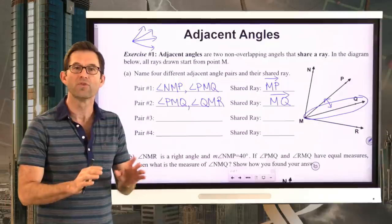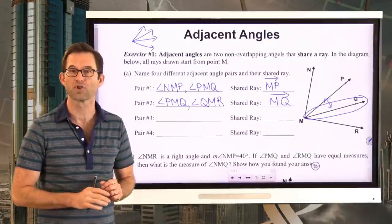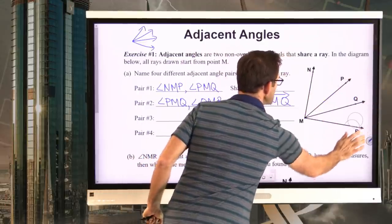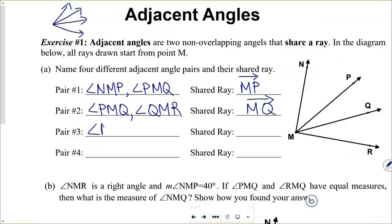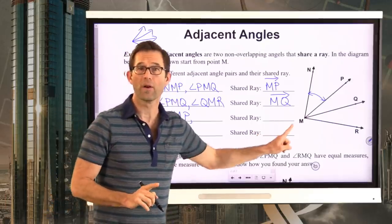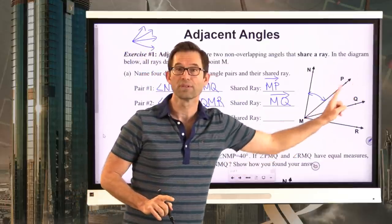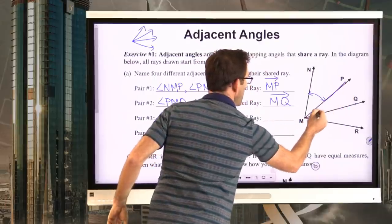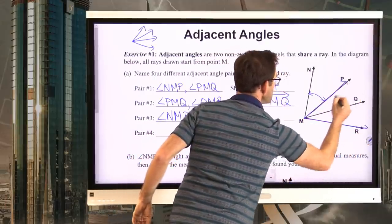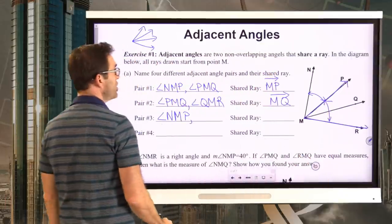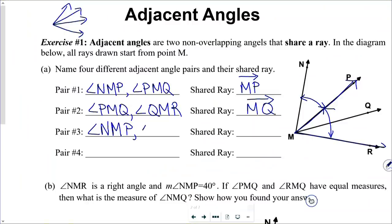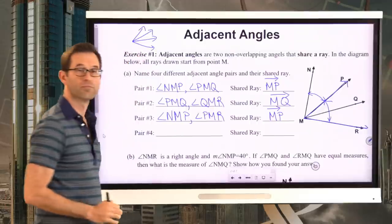Those were probably the two most obvious pairs of adjacent angles. Let's go back to angle NMP. There's another angle on here that also has ray MP besides PMQ, and that would be angle PMR. It's no problem that ray MQ is sitting down the middle of it — that's irrelevant. This is angle PMR, and NMP and PMR share ray MP.